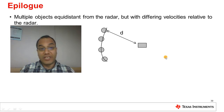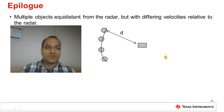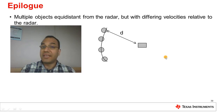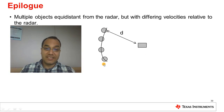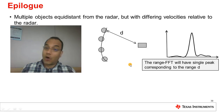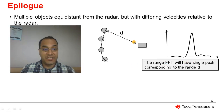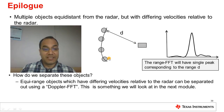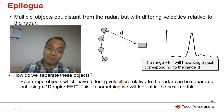This concludes the current module. We learned that the phase of the IF signal is very sensitive to small changes in the range of the object, and we saw how this can be used in velocity estimation. We now have the necessary background to begin answering the question from the end of module one: when multiple objects with different velocities are virtually equidistant from the radar, the range FFT shows only a single peak. It turns out that equirange objects with differing velocities can be separated using what is known as a Doppler FFT, which we will look at in the next module.